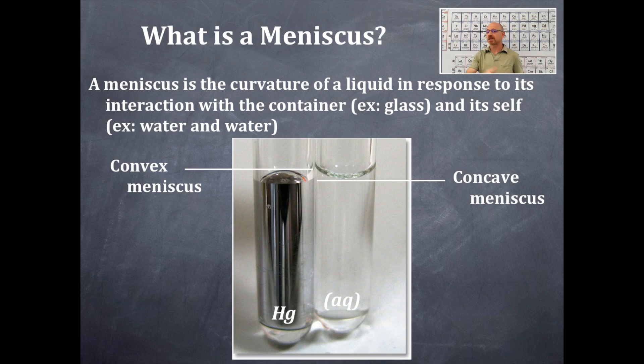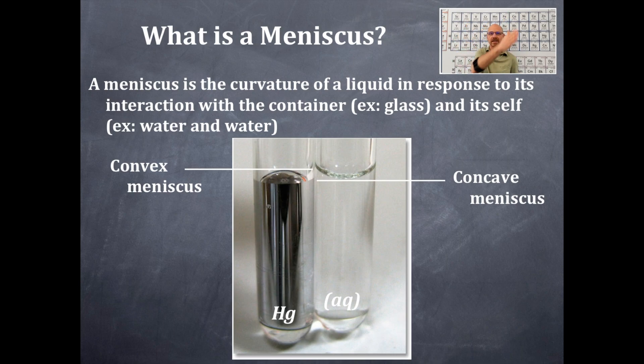With a liquid or aqueous meniscus other than mercury, it's more likely going to be aqueous, and you will have a concave meniscus like this. And you're going to read the bottom of that meniscus.